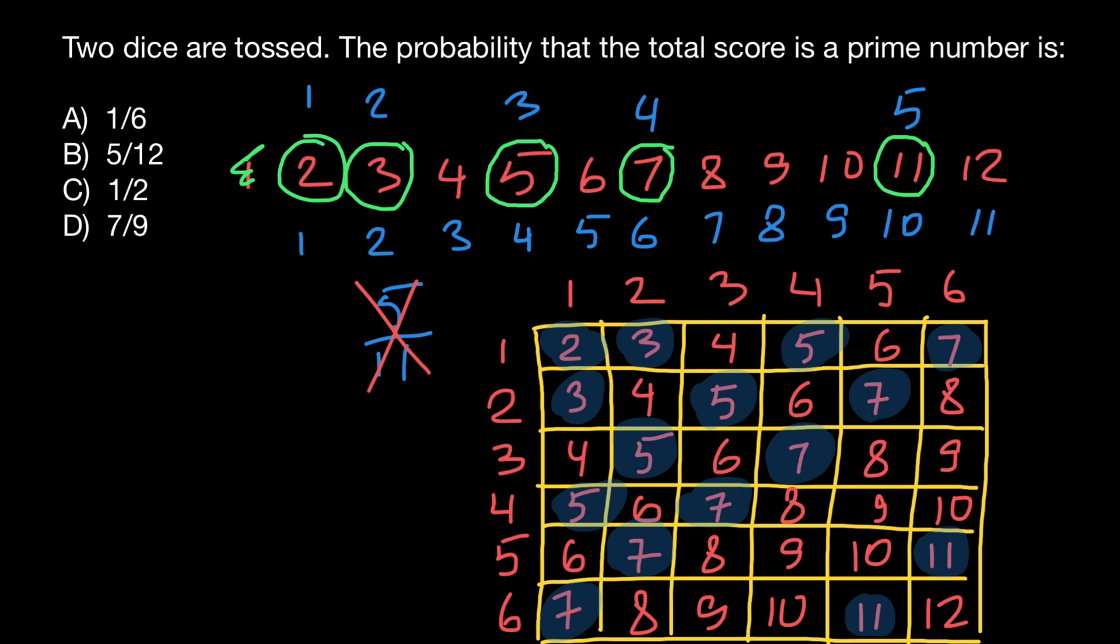So our answer have to be 15 out of what is our sample space is going to be six by six is going to be 36. So out of 36. And as you see, we can divide both numerator and denominator by three. So we are going to get five over 12. And this is going to be our answer. And this is answer B.